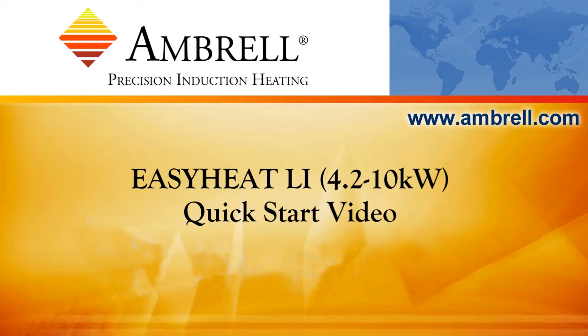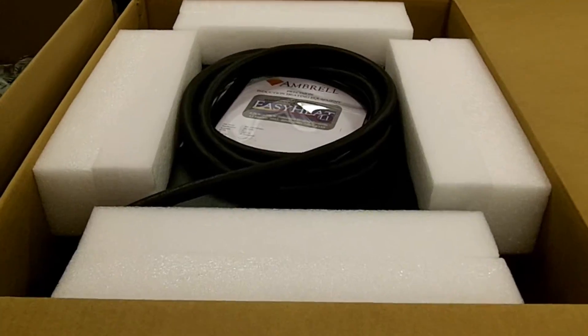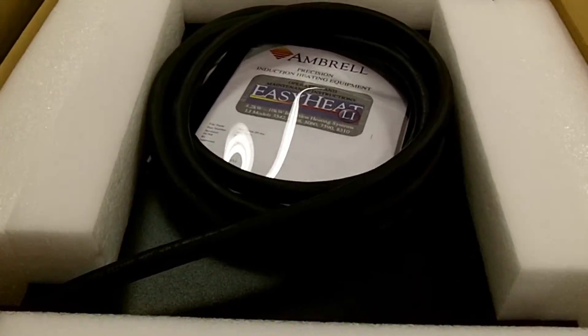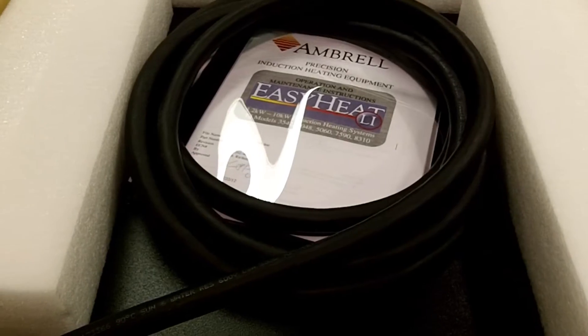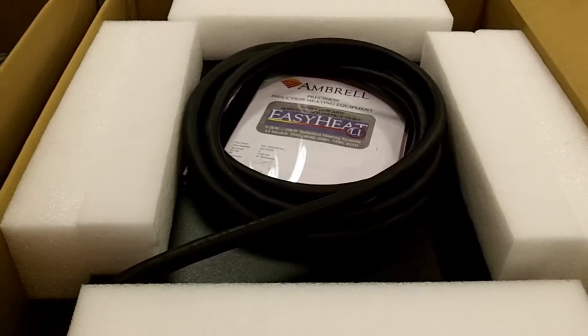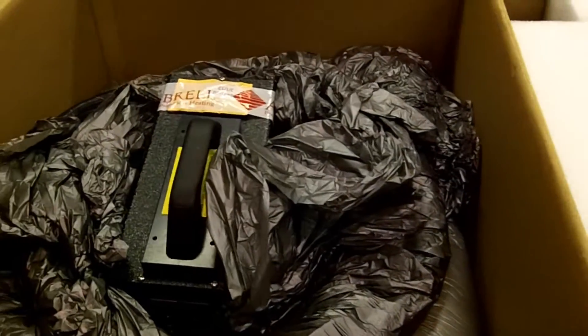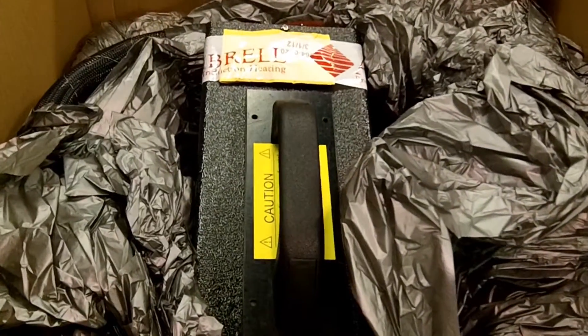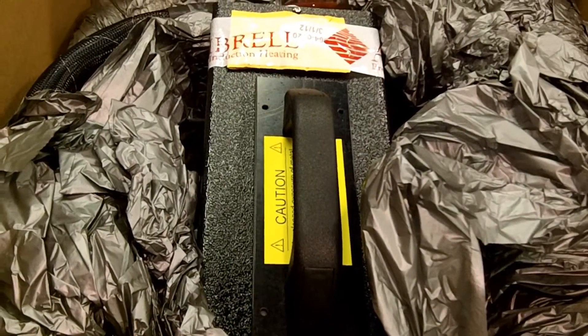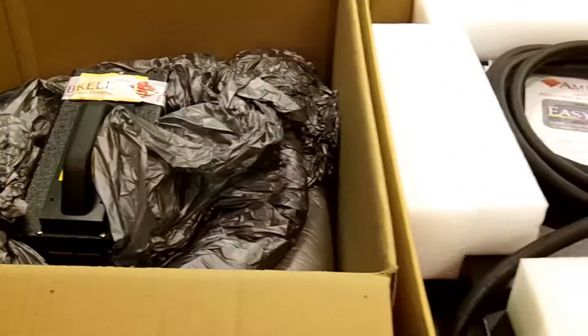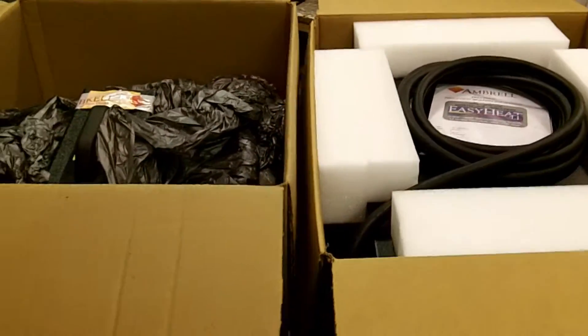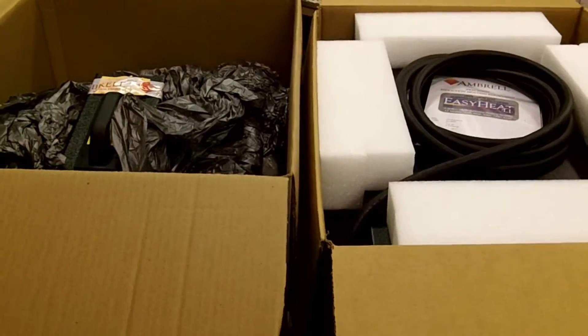Hello and welcome to the Easy Heat LI Quick Start Guide video. First, let's take a look at the packaging. The first box that we see here, which is to the right, contains the Easy Heat LI power supply, along with the manual which is sitting on the top. And the box to the left contains the Easy Heat LI workhead. These are the two boxes that you should expect to receive upon ordering your Easy Heat LI.